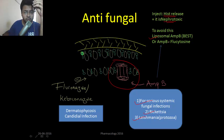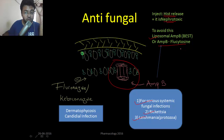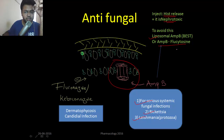Liposomal Amphotericin B releases the drug slowly, which is the best option. You can also combine Amphotericin B with flucytosine so that you can use a lower dose of Amphotericin B, but the best approach is liposomal Amphotericin B.